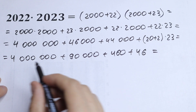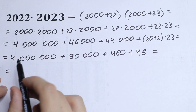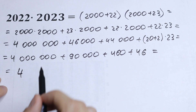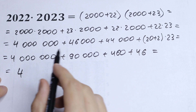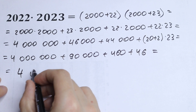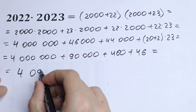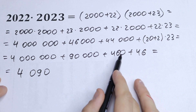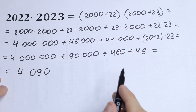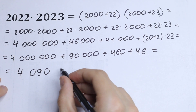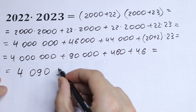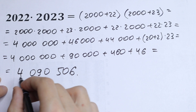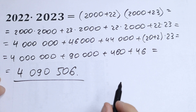So let's add all of these. We will have of course 4 million, plus 90 thousand, and 460 plus 46, which is 506. So we get 4,090,506, and this is our answer.